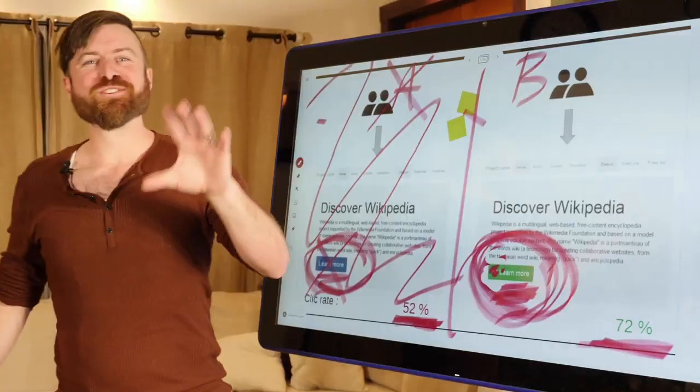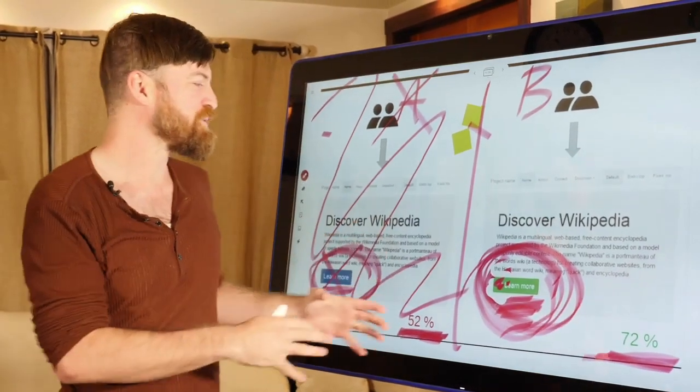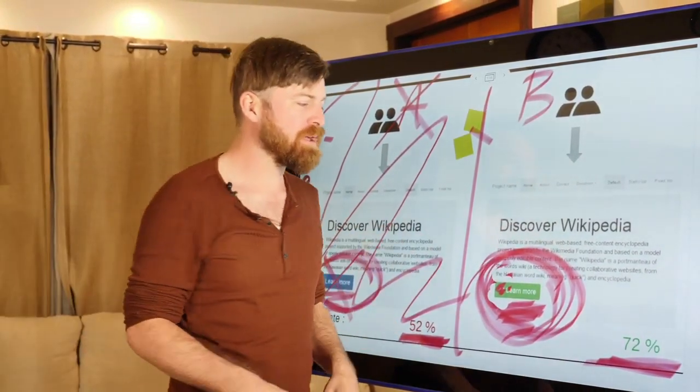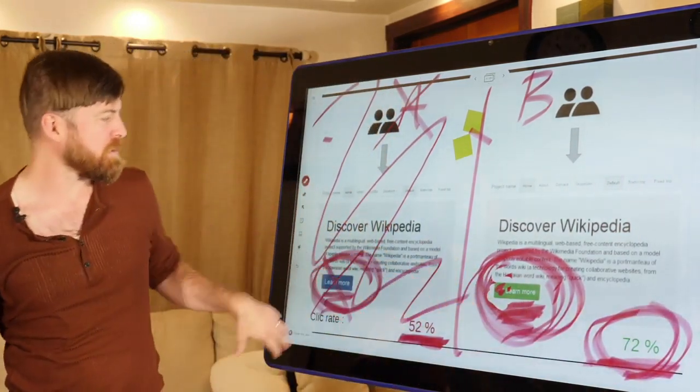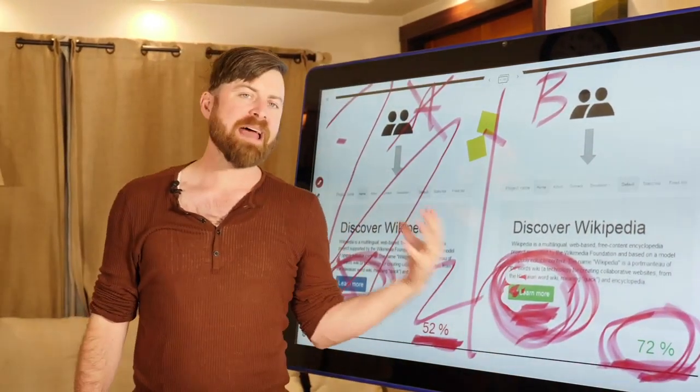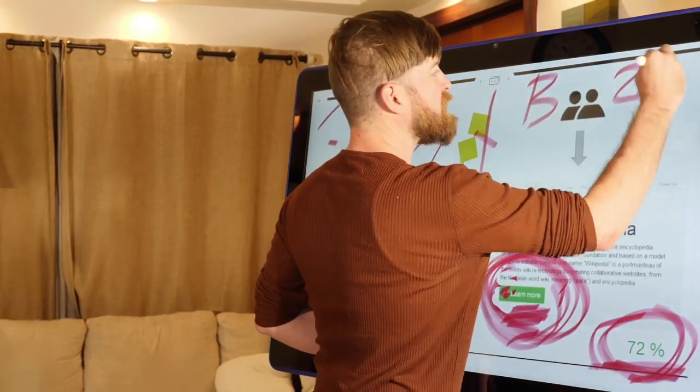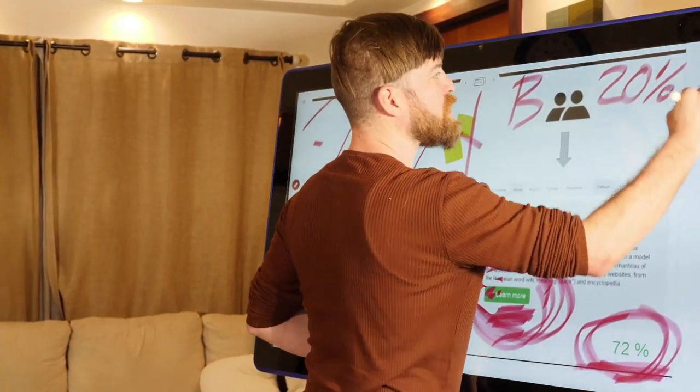But John, why is this useful? Like, you know, button colors and figuring out ideas about why the button work better. Like, why is that useful information to me? So the reason why this is useful information is actually because if you notice 20% more people signed up using this button to donate to Wikipedia, that means 20% more donations, okay?